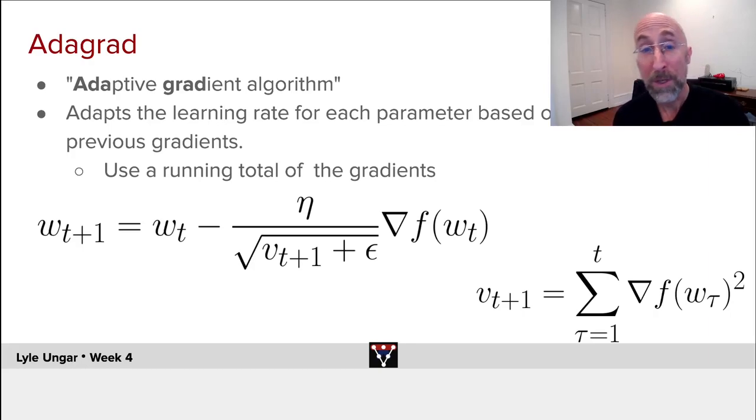And the algorithm is really simple. It says update our weights, each weight individually, by subtracting off a learning rate—a global constant, maybe annealed if you want—divided by a scaling term for each weight, v sub t plus one, multiplied by the gradient of the loss function for that weight at the current time. So this is to be interpreted as for each weight separately.